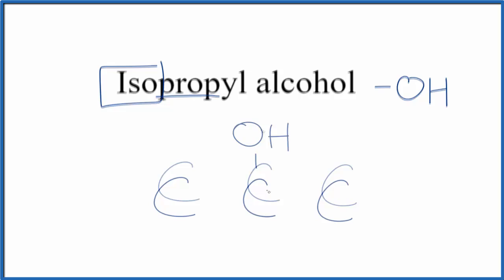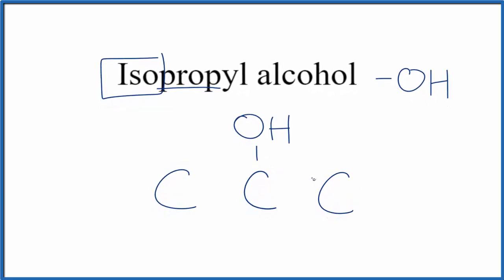Now we know that each carbon is going to be bonded to four things. So we'll put our single bonds in, and then we have one, two, three, four. These lines represent hydrogens: one, two, three, four, and then one, two, three, four. So if you write the hydrogens in, this is the formula for isopropyl alcohol.